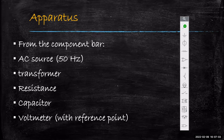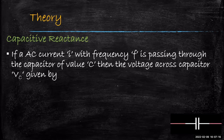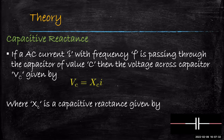Before we go to the simulator and work out the experiment, we will understand the theory behind it. What is capacitive reactance? If we have an AC current I with frequency F passing through a capacitor of value C, then the voltage across the capacitor Vc is equal to Xc times I, where Xc is the capacitive reactance given by 1 upon 2πFC. So Xc acts like a resistance for a capacitor.